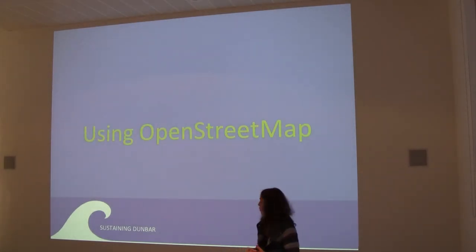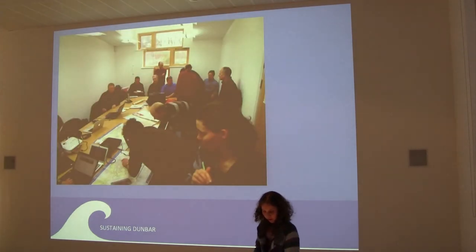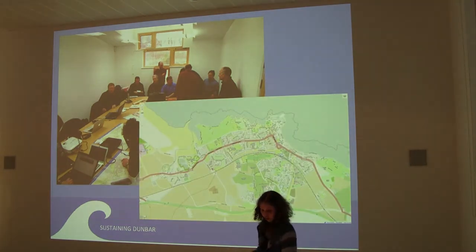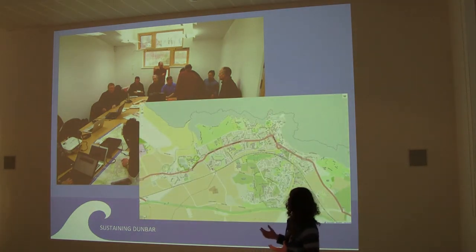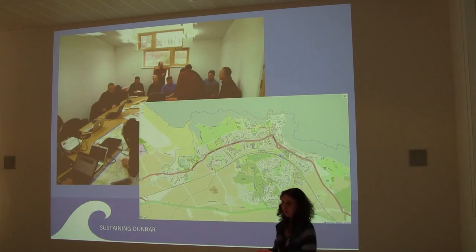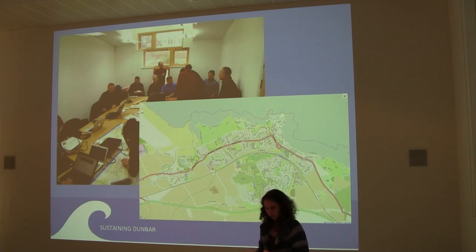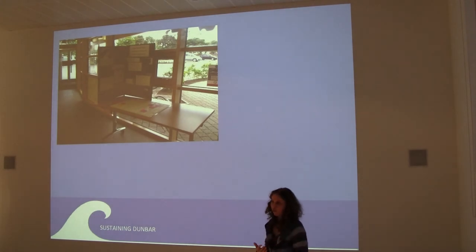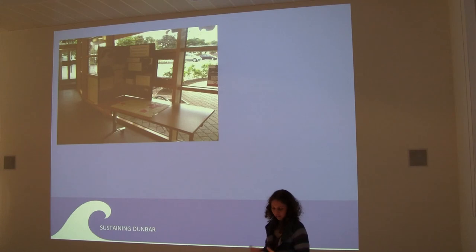OpenStreetMap is something we started using relatively recently. We had a mapping party in March, which allowed us to get a good amount of buildings and other features onto the local map. That's really good because we now have a nice base map that we can use for future mapping work. Since then we've been working quite a lot to raise the profile of OpenStreetMap and try to build a really local mapping community, so we can get out and map things like speed limits, conditions of paths, and so on.